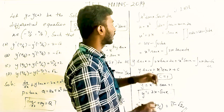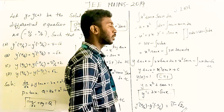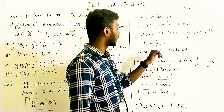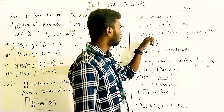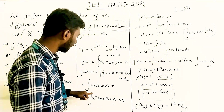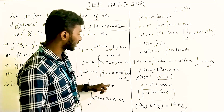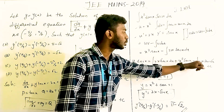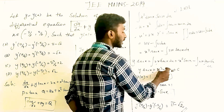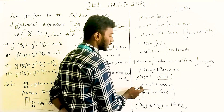Differentiating u gives du = 2x dx. Integrating dv gives v = sec x. Substituting into the formula: x²·sec x − ∫2x·sec x dx. So y·sec x = ∫2x·sec x dx + x²·sec x − ∫2x·sec x dx + C. The two ∫2x·sec x dx terms cancel, leaving y·sec x = x²·sec x + C.